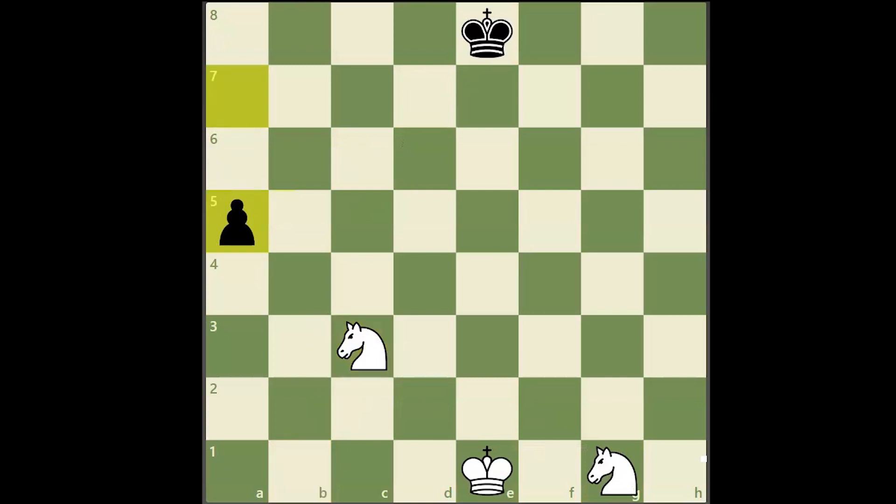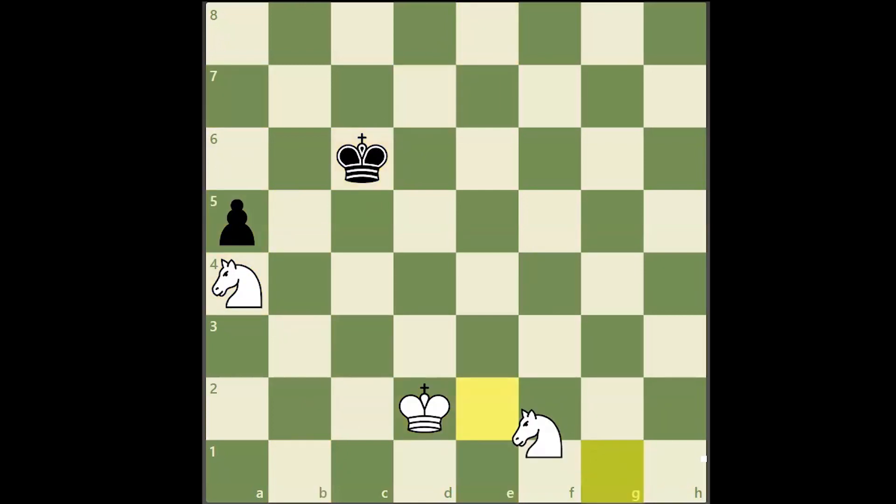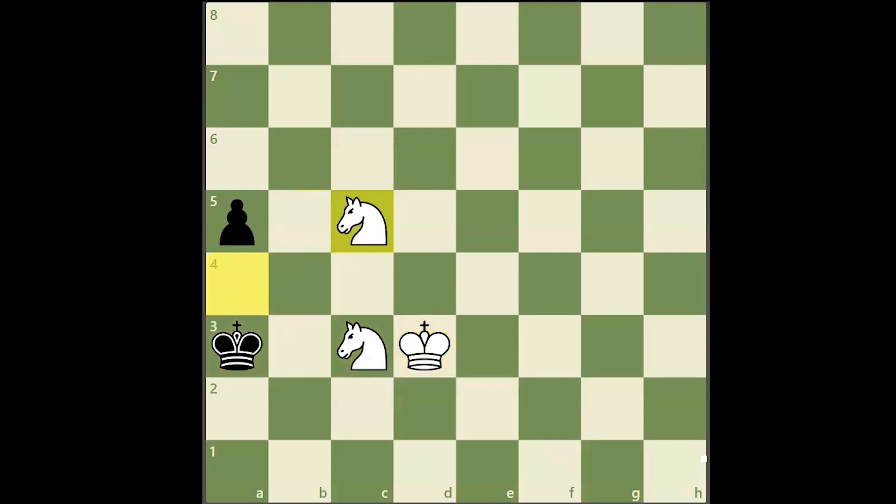Just like with any pawn, you want to block the pawn at the upper half of the board. Because a pawn is a rook pawn, your blockading knight's mobility will be greatly limited.